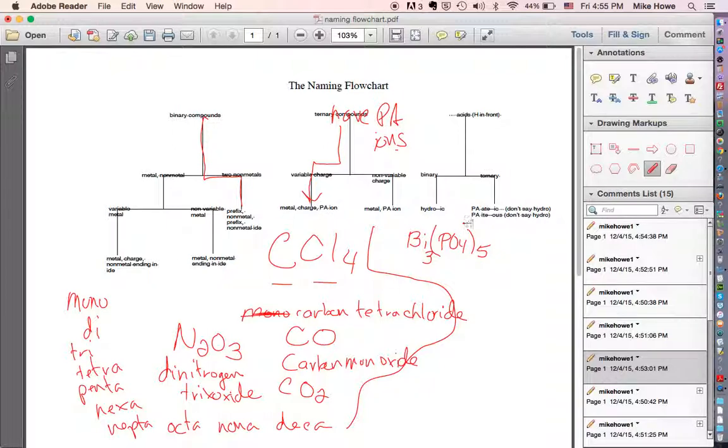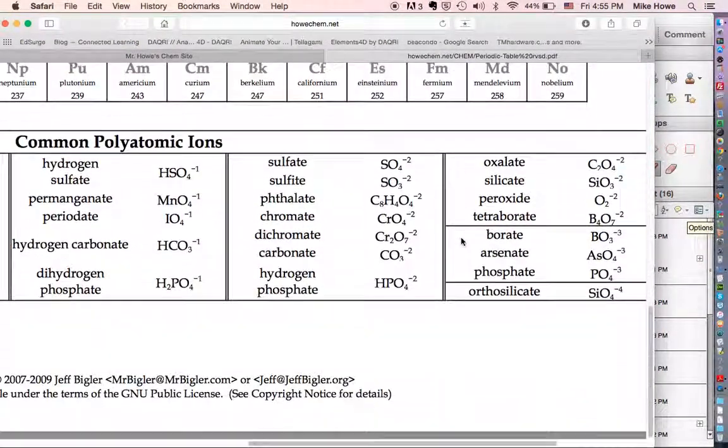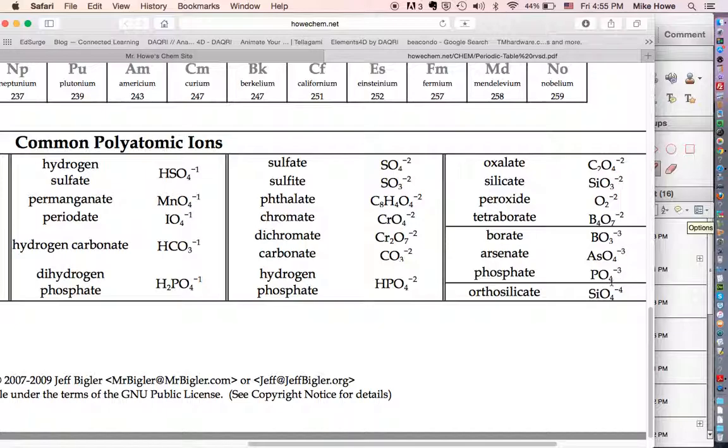So you look at the polyatomic ion phosphate. It's minus 3. You know that because of the periodic table. Down at the bottom of your periodic table, it tells you phosphate is minus 3. At this point, that's how you're going to know it. Right there it is, phosphate minus 3.